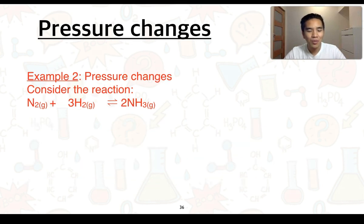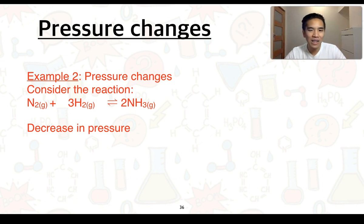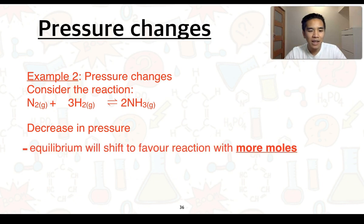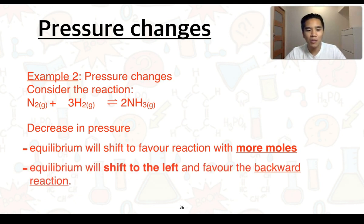For our second example, again with the same reaction, we're going to look at a decrease in pressure — we can do that by increasing the volume of the container, meaning fewer collisions with the container. Equilibrium will shift to favour the reaction that will now have more moles or more molecules on their side of the equation, so we know this is going to be the backward reaction. We can therefore say equilibrium will shift to the left and favour the backward reaction. Again, Kc does not change — it just gets re-established.